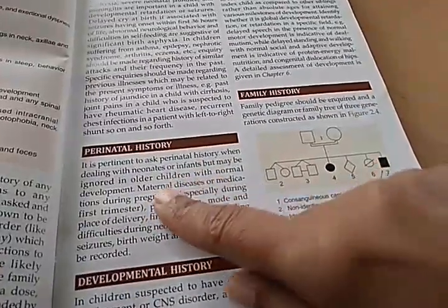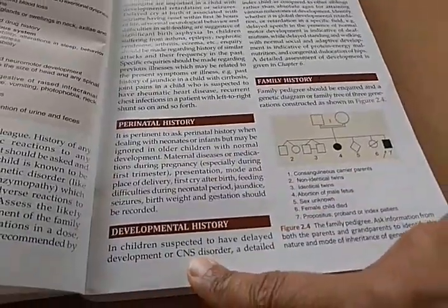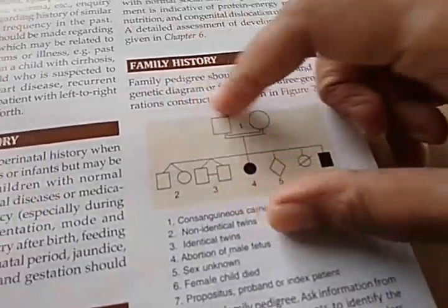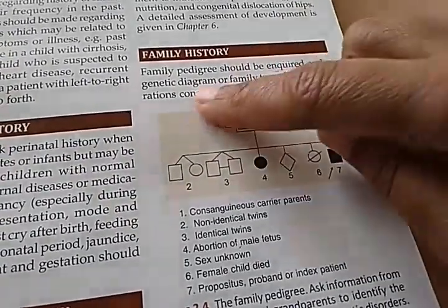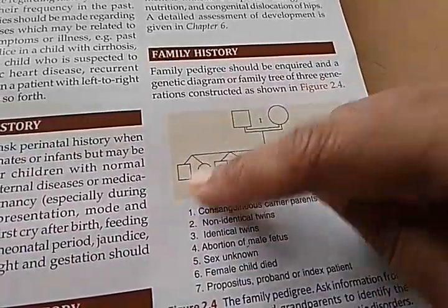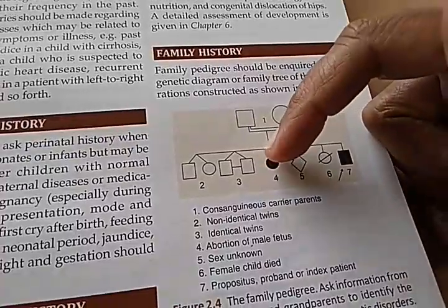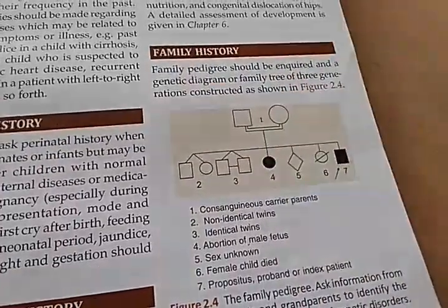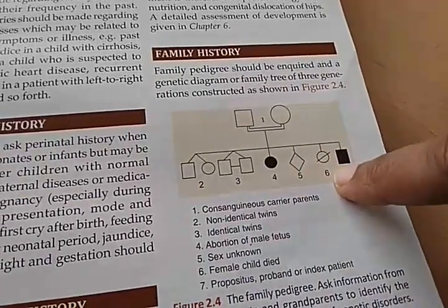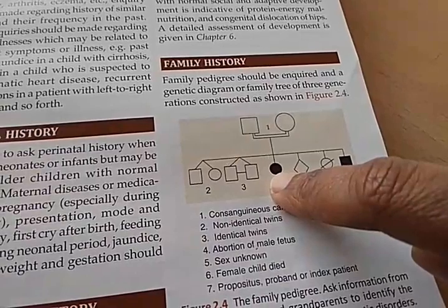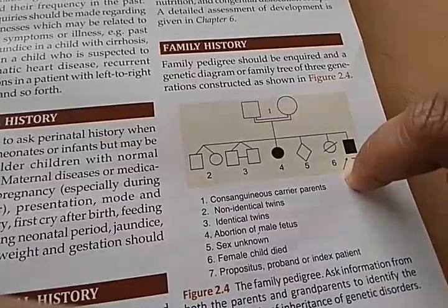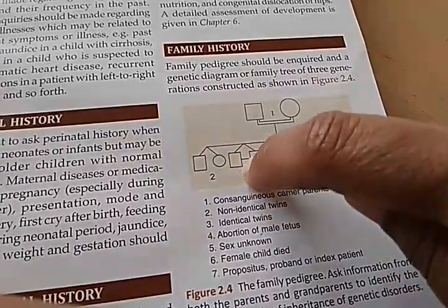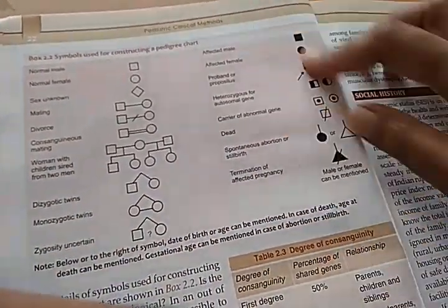History of past illness includes perinatal history — you can ask about maternal diseases during pregnancy. There is also developmental history and family history. They show a pedigree chart indicating consanguineous carrier patients — the double line indicates consanguinity. Non-identical twins, identical twins, female (circle), unknown sex, a female child that died, an aborted child, and the index patient are all represented.